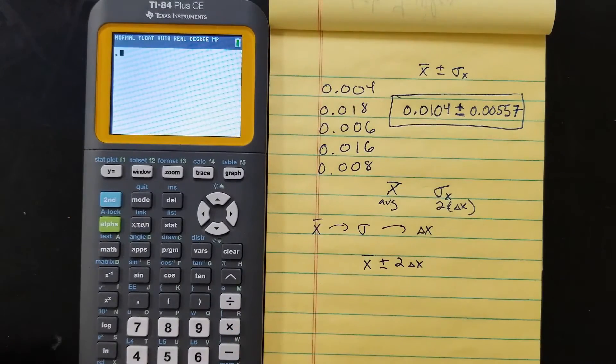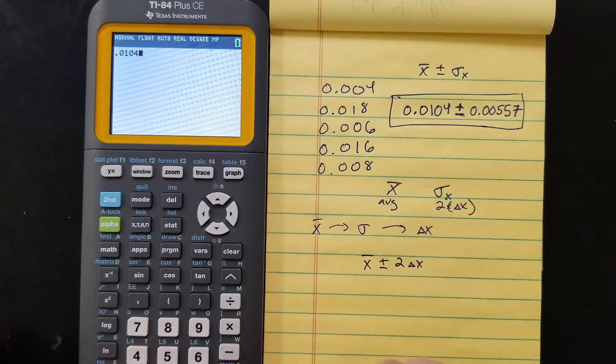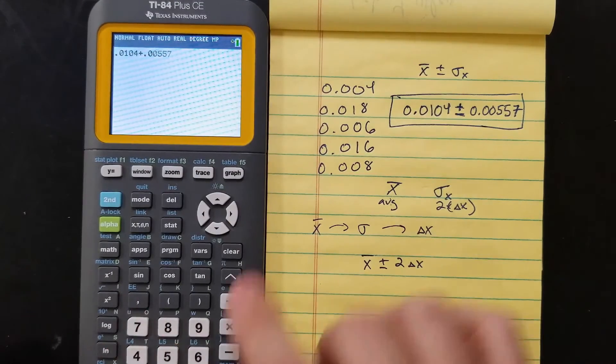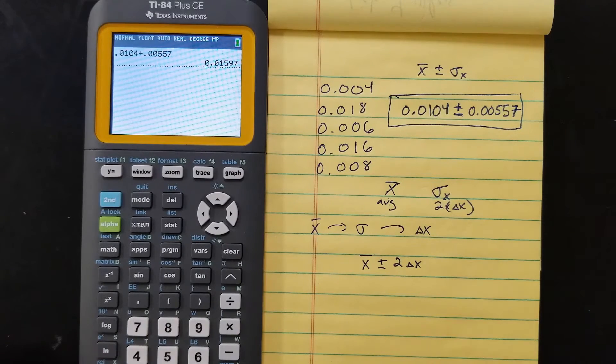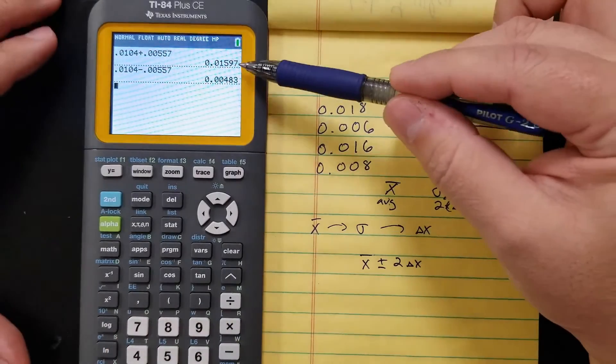So let's show you what that means. 0.0104 plus 0.00557 gives me 0.01597. That's the high end. And the low end would be 0.0104 minus 0.00557.